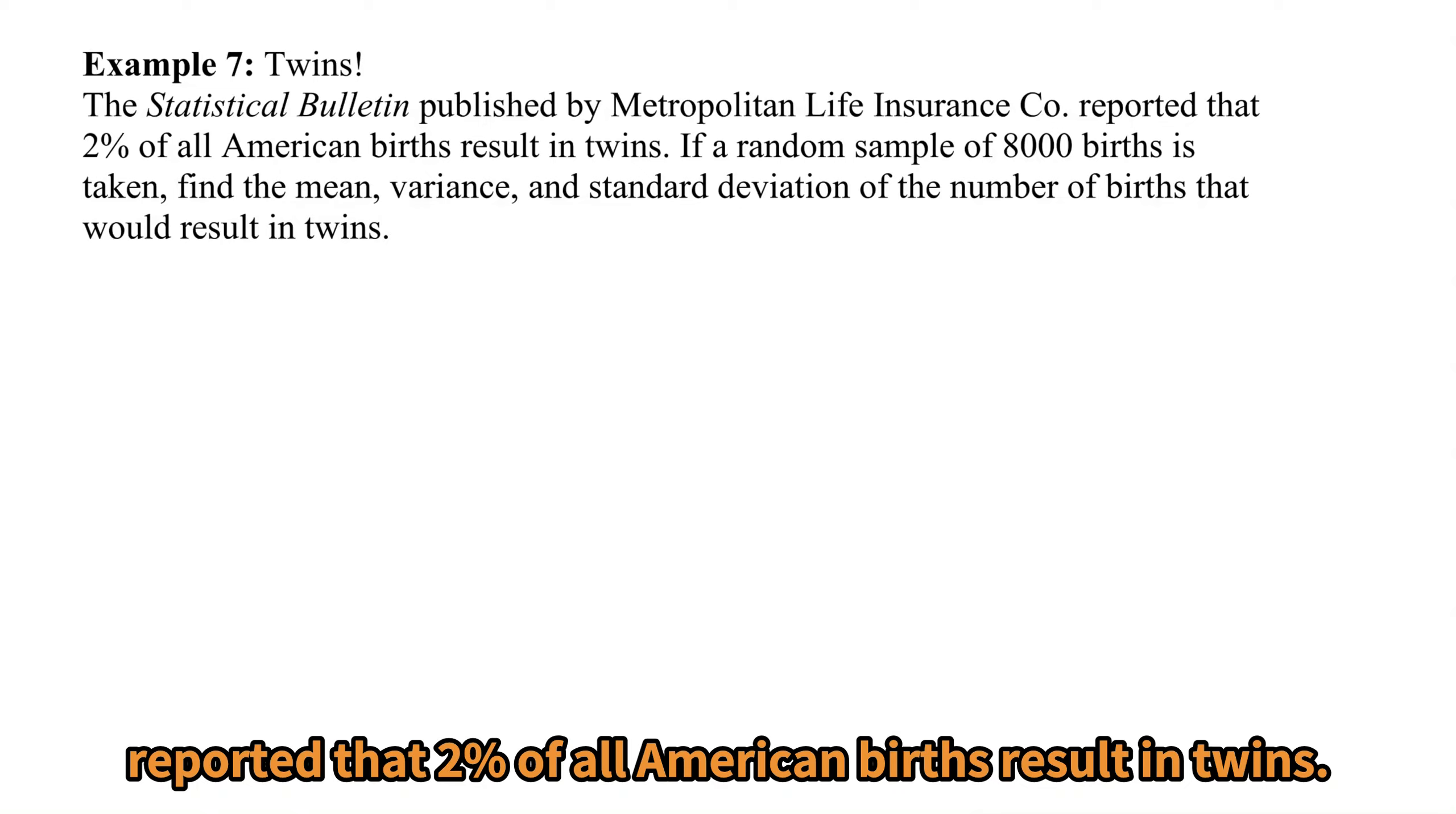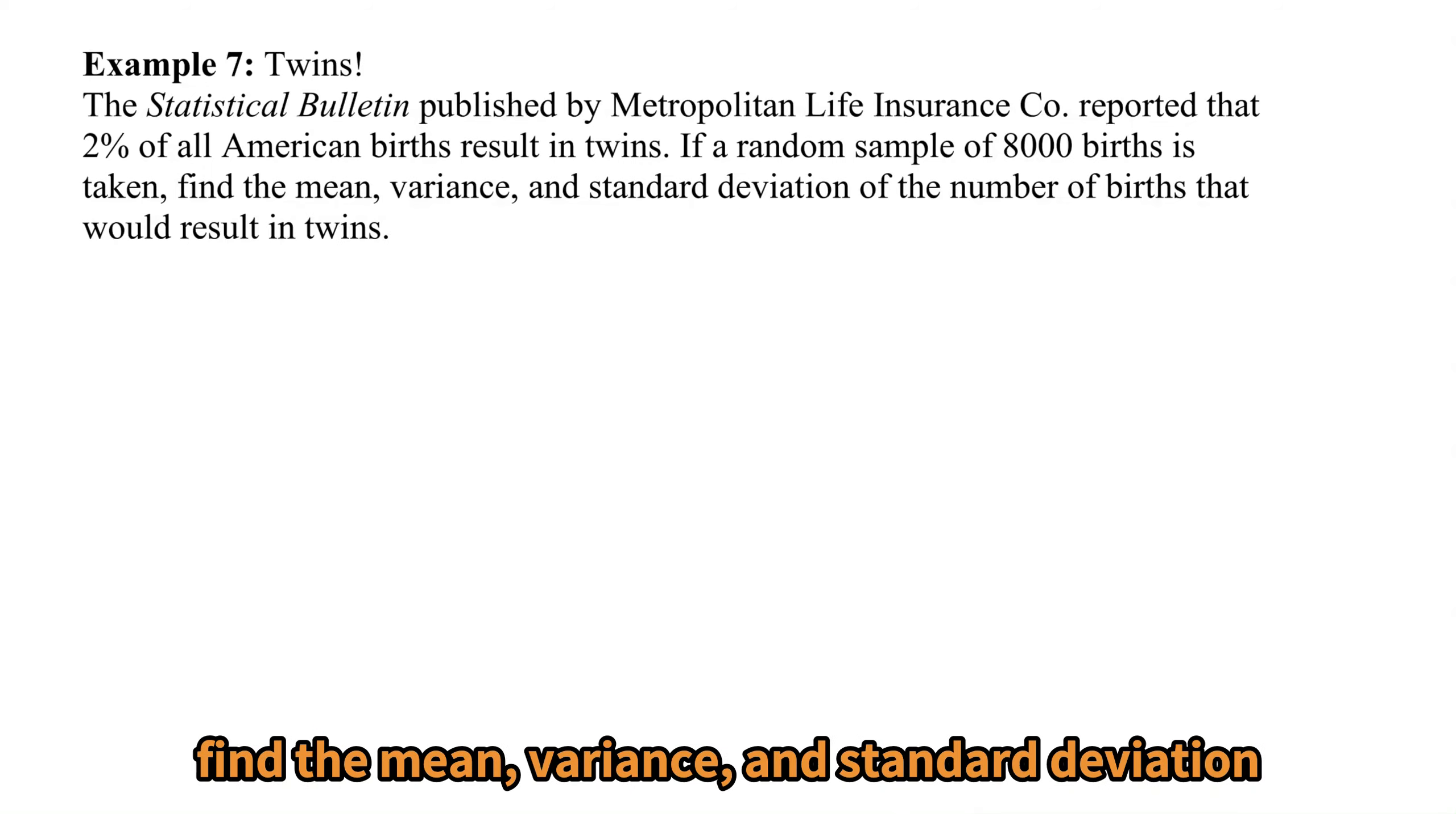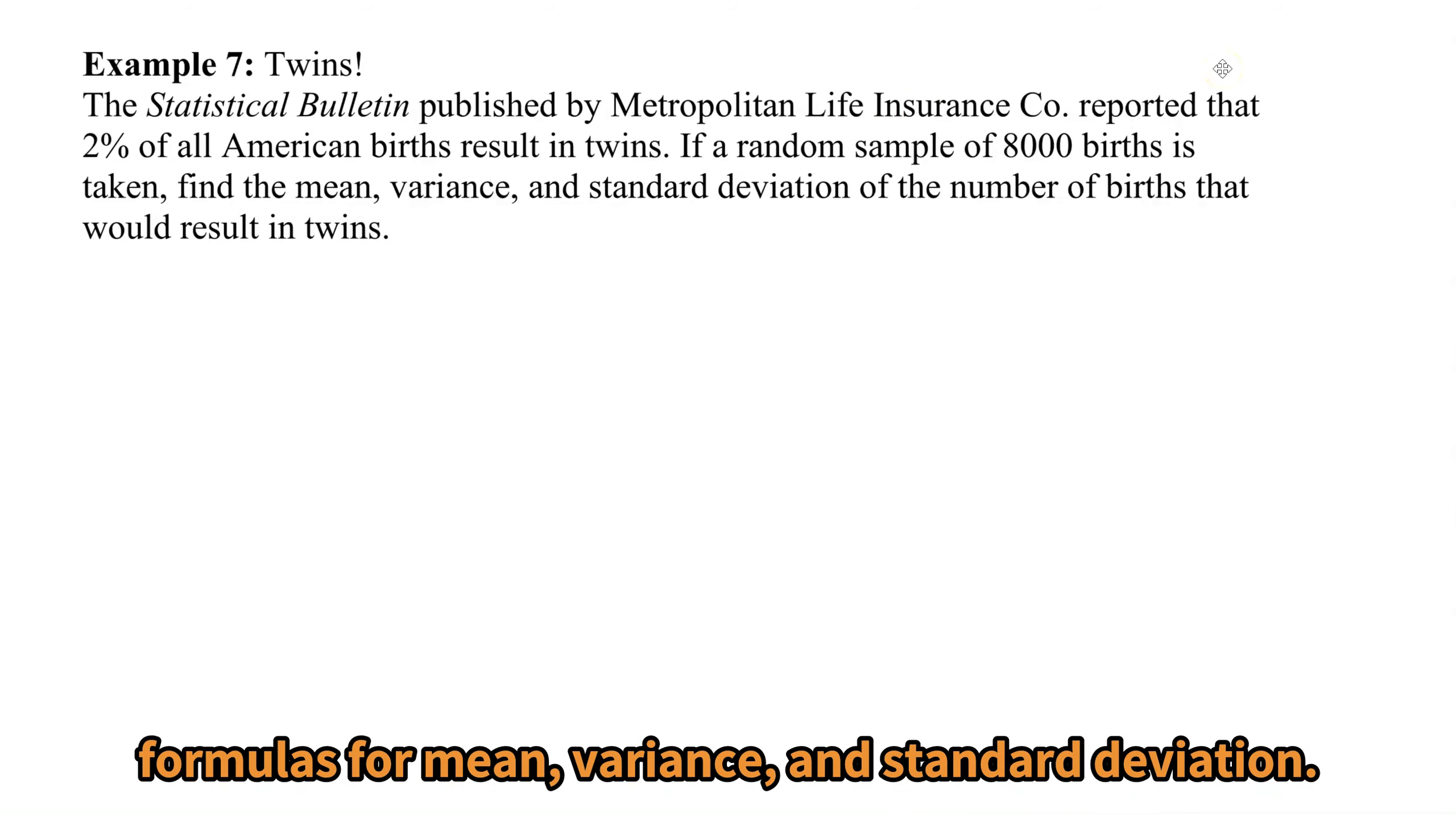The Statistical Bulletin published by Metropolitan Life Insurance Company reported that two percent of all American births result in twins. If a random sample of 8,000 births is taken, find the mean, variance, and standard deviation of the number of births that would result in twins. Let's first check and make sure that this is a binomial experiment so that we can use the binomial distribution formulas for mean, variance, and standard deviation.